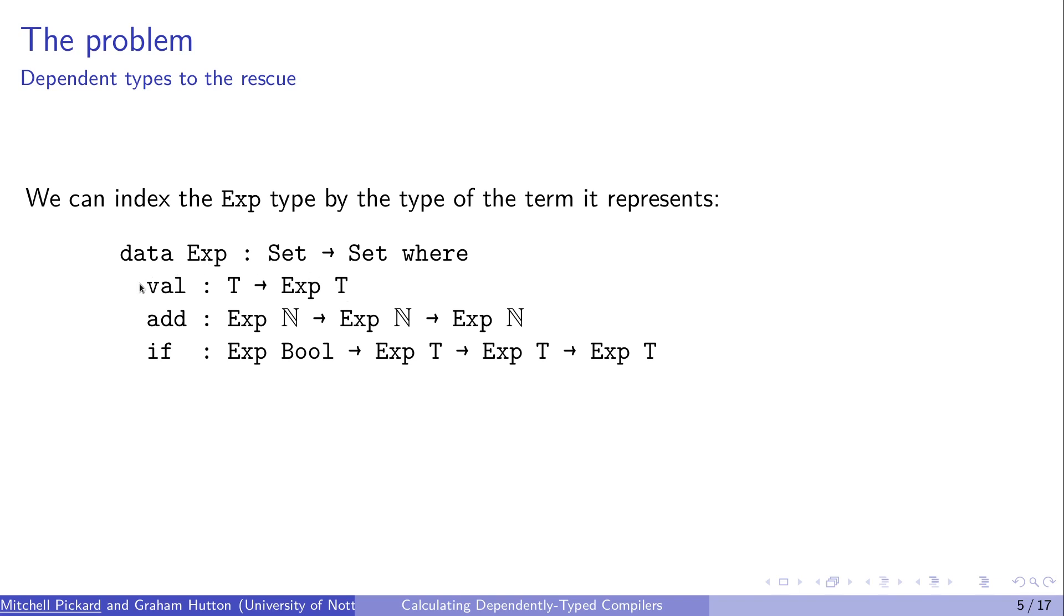So the constructor for values gets collapsed into just one constructor. Whatever value this is, whether it's a nat or a bool, it can go through this constructor and we will get an exp nat or an exp bool out the other side. Add here specifies that we're taking expressions of natural numbers every time. If takes a bool expression in, and that is the condition, and it takes a true branch and a false branch, which must both be the same type.